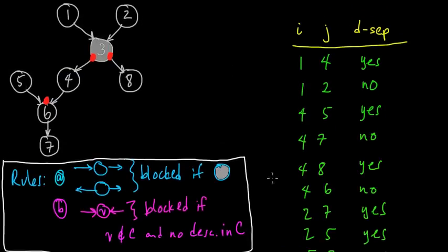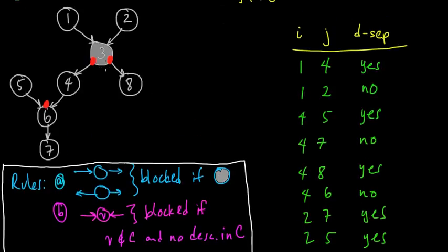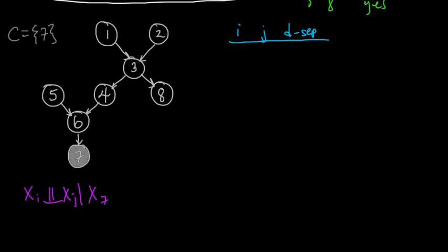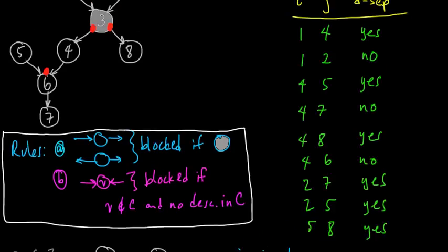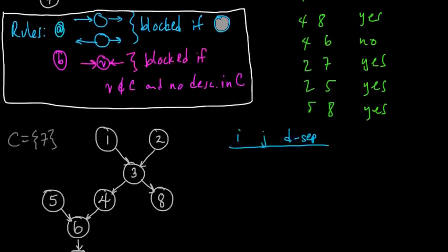We annotated this graph with these little stop signs. We put a stop sign before a tail at a vertex that was being conditioned on. So let's do that. Well, there are no tails at 7 — that's the node we're conditioning on. We also put a stop sign at a head-to-head place if the vertex was not being conditioned on and none of its descendants were being conditioned on.